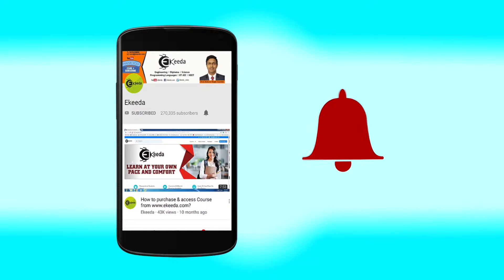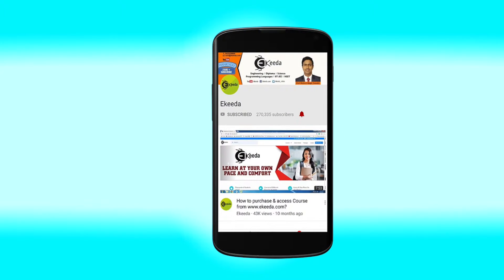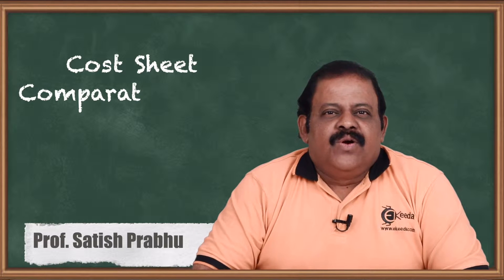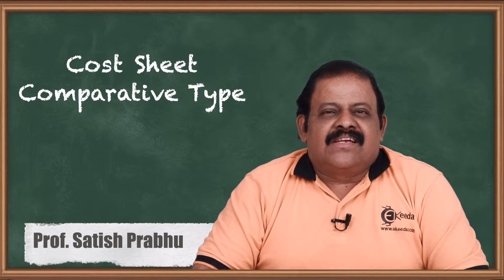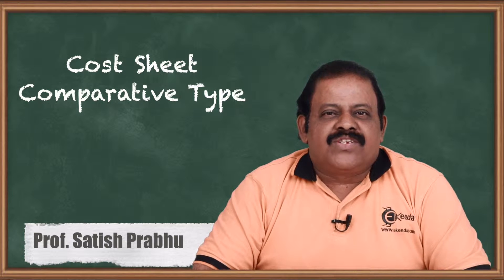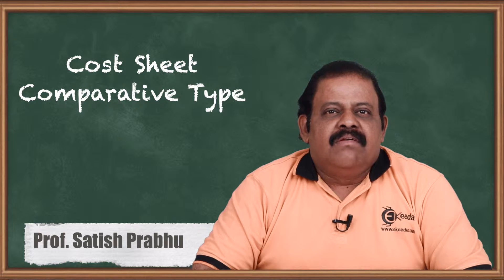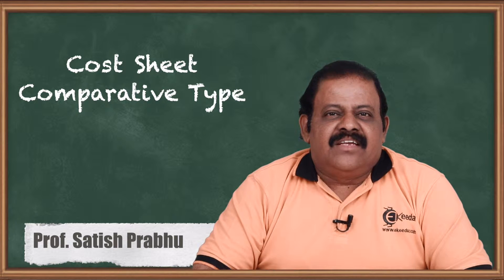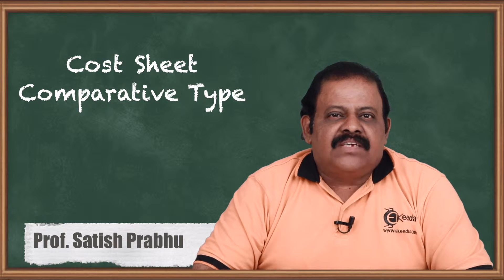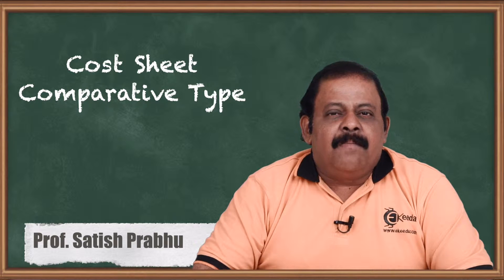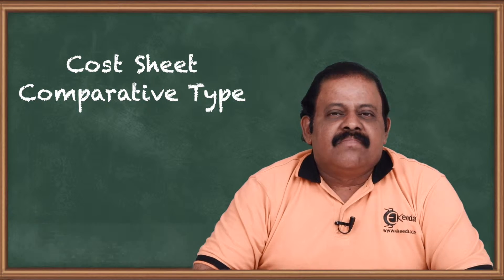Click the bell icon to get the latest videos from Ikida. Hello friends, today we'll be discussing one question of a cost sheet of comparative type, where the entire year is divided into two parts — first half and second half — and comparison of cost is done.